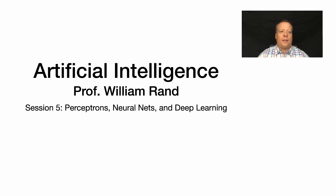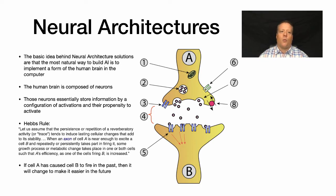So let's talk about neural architecture. Where does the idea of neural nets come from? The basic idea behind neural architecture solutions is to try and take the AI system and base it upon the real brain. The human brain is composed of many neurons, and these neurons essentially store information by configuration of activations and their propensity to activate.